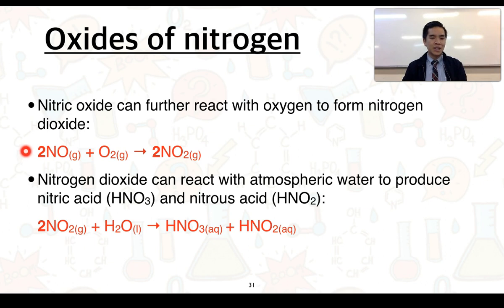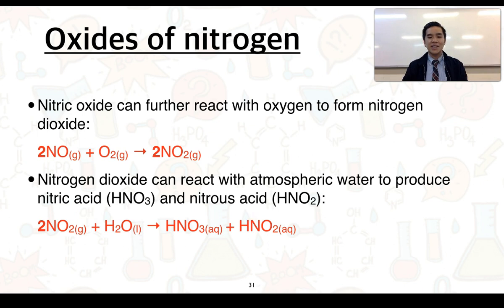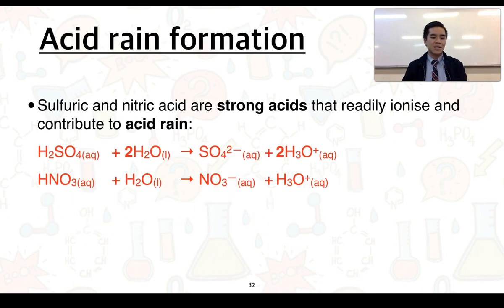Nitric oxide can then further react with oxygen to form nitrogen dioxide, given by this equation. Nitrogen dioxide can then react with atmospheric water — it actually produces two different types of acids: nitric acid and nitrous acid. Nitric acid is our strong acid; nitrous acid is our weak acid. So we say that nitric acid is a contributor to acid rain.